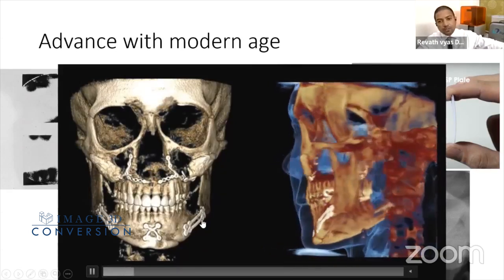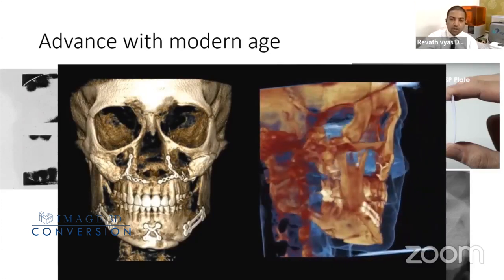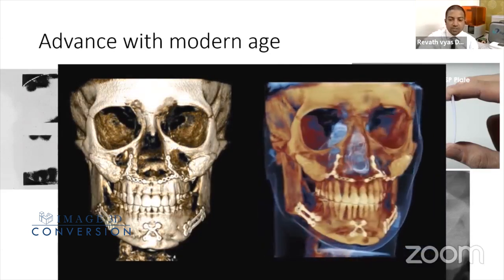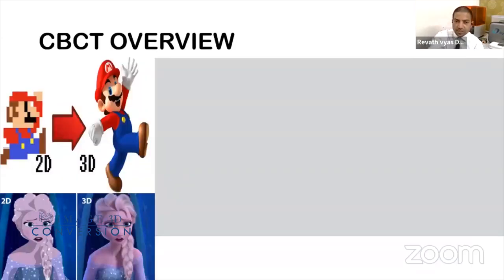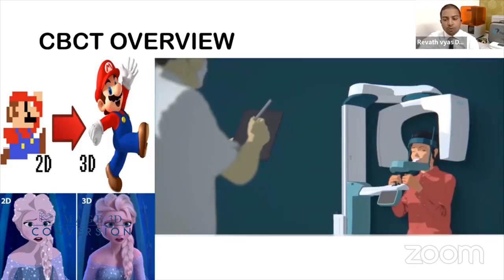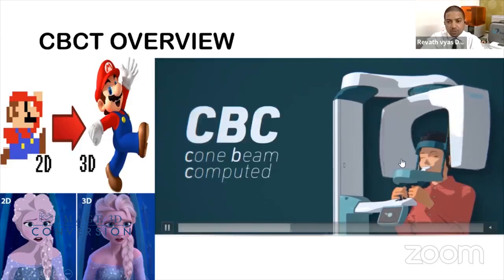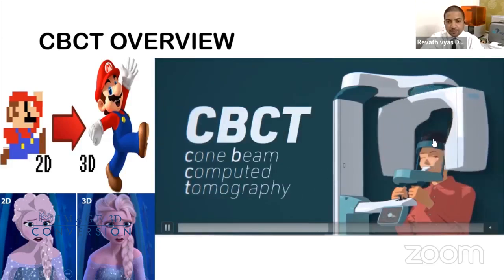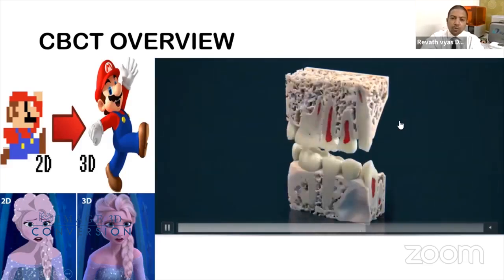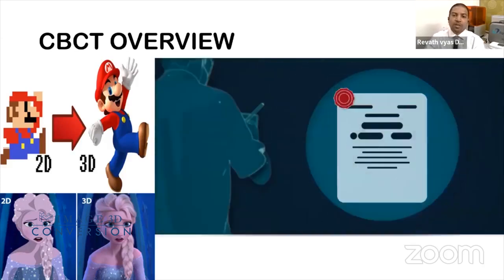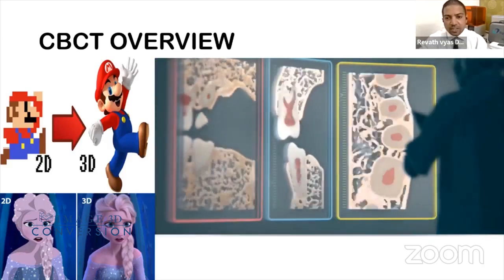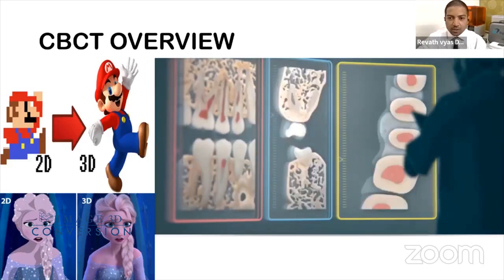From OPGs, we moved into three-dimensional imaging, where we can capture images in all three dimensions. Not only in dentistry but everywhere — in medicine, in animation — we are moving from two dimensions to three dimensions. In cone beam computed tomography, a CBCT machine captures two-dimensional images of the patient from all different directions, and all those images get overlapped to form a three-dimensional image, which is then reconstructed into axial, sagittal, and coronal sections.